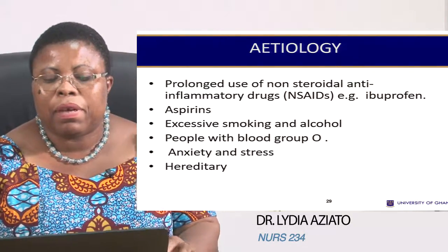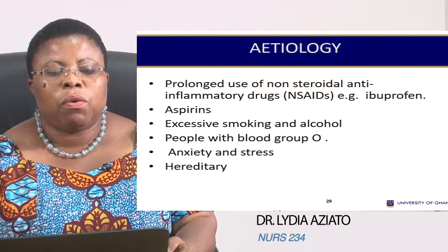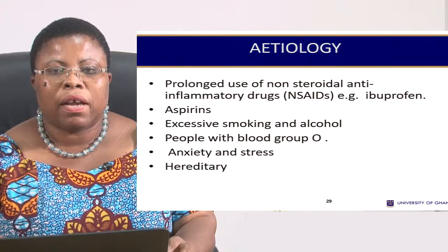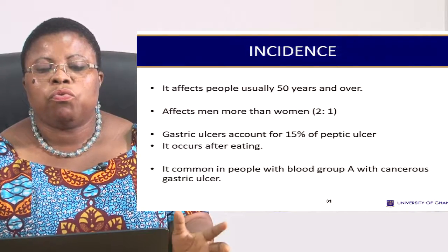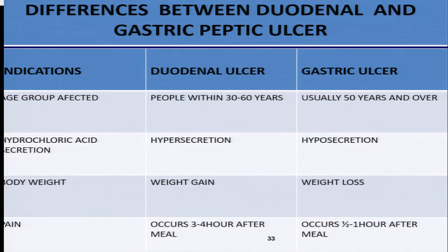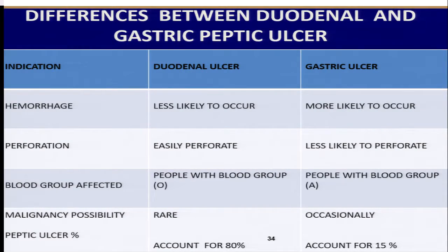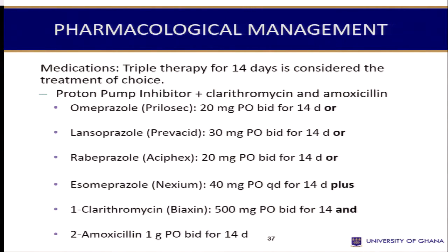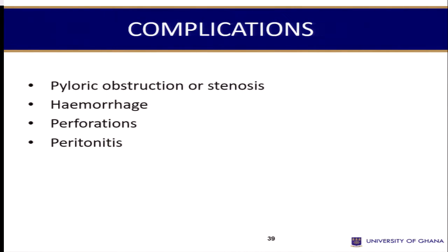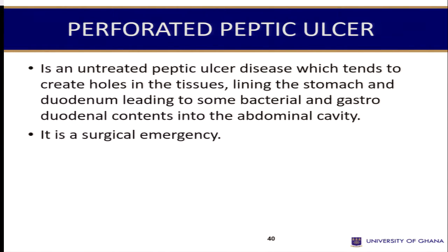Because you have done peptic ulcer in medicine, the additional information here is for you to read and add to what you know. A table is included that distinguishes duodenal ulcer from gastric ulcer. Clinical manifestations and pharmacologic treatment for ulcer patients are also listed. When it comes to perforated peptic ulcer, which is the surgical focus here, I will stay within the domain of surgery.